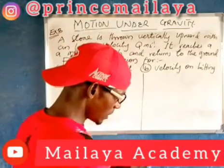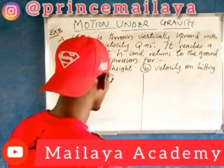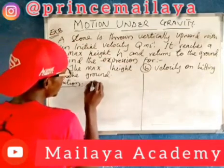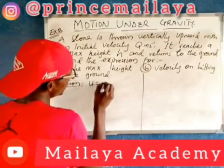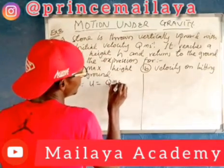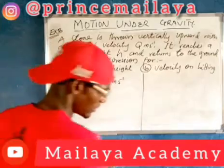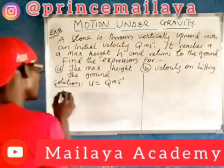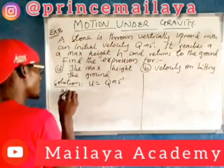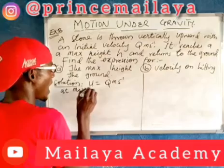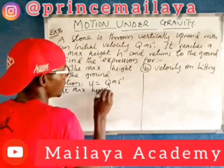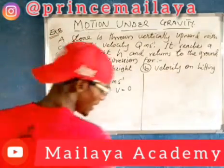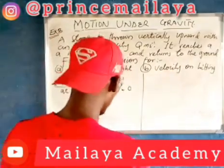Now let us look at the solution. Our initial velocity U is equal to 2 meters per second. At maximum height, V is equal to 0 — our final velocity is equal to 0.